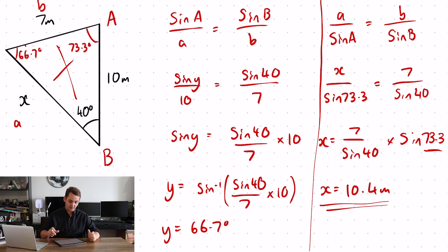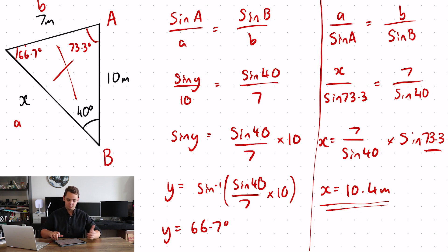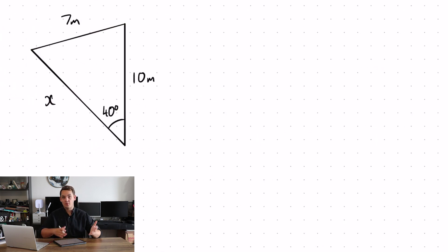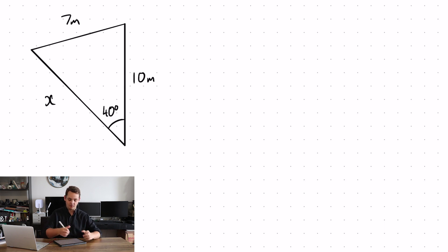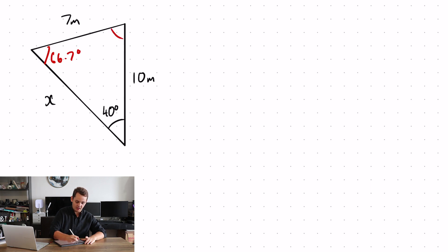Let's have a look at this again, but this time I'm going to use the sine rule and then the cosine rule. Rather than showing you how to use the sine rule again, I'm going to put the information I gathered from the sine rule on screen. So the angle here was 66.7 degrees and the angle there was 73.3 degrees, found the same way as I did a moment ago.